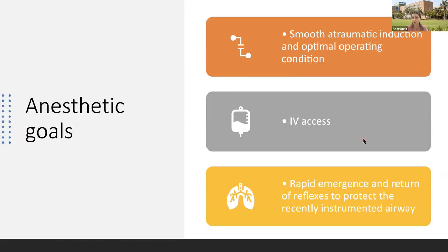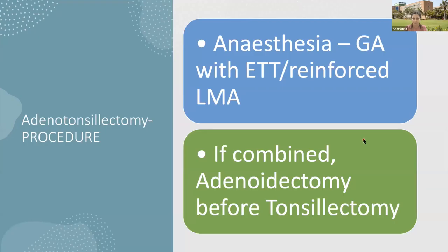The anesthetic goals are smooth atraumatic induction and optimal operating conditions. Intravenous access is a must. Rapid emergence and return of reflexes is important because the airway is edematous and there can be bleeding, so reflexes are needed to protect the recently instrumented airway. The anesthetic plan can be either GETA — general anesthesia with endotracheal intubation — or a reinforced LMA. Reinforced LMA has been reported in series to protect the airway and provide optimal operating conditions, and it is not susceptible to kinking.